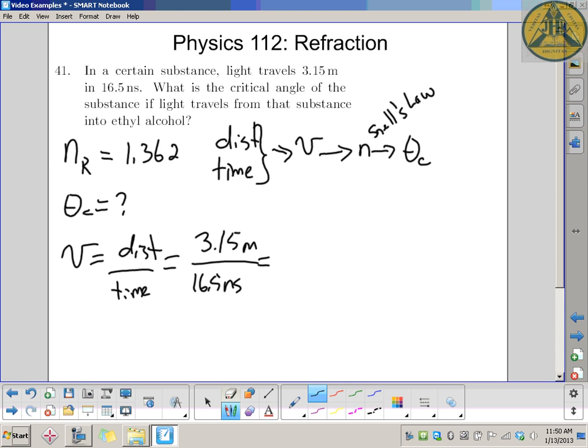I'm just going to rewrite that nanoseconds as seconds. Don't put the decimal between the 1 and the 6. The problem says 16.5. Replace the n with times 10 to the negative 9. That gives us our velocity to be 1.91 times 10 to the 8 meters per second.